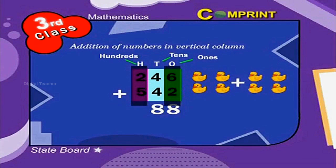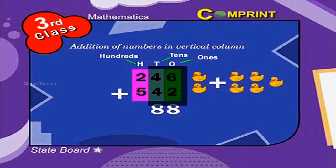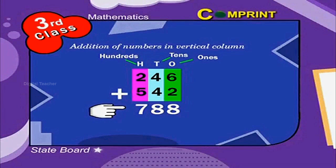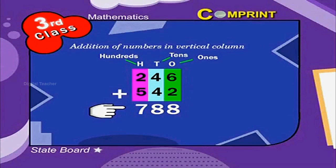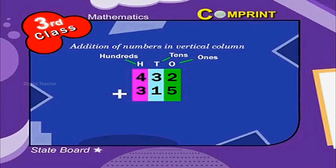At last, we have to add the digits of the hundreds place. Two plus five is equal to seven. Putting it all together, we get the answer 788. Let us see a few more examples. Four hundred and thirty-two plus three hundred and fifteen. We get the answer 747.